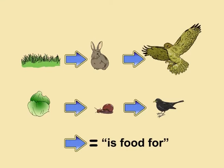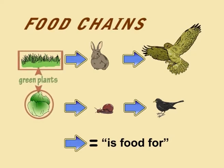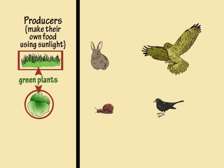You can use arrows to show what organism feeds on what and so construct a food chain. Each food chain starts off with green plants because they make their own food using sunlight — they are producers. Animals, on the other hand, are consumers because they consume or eat other organisms.